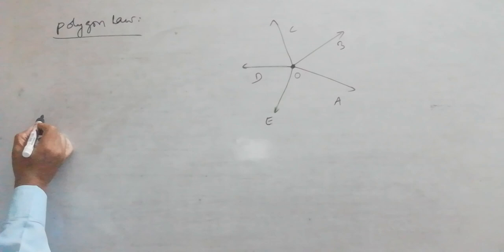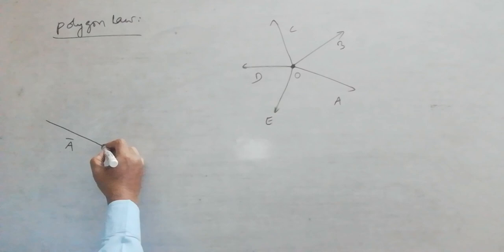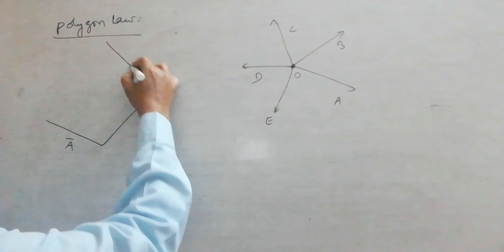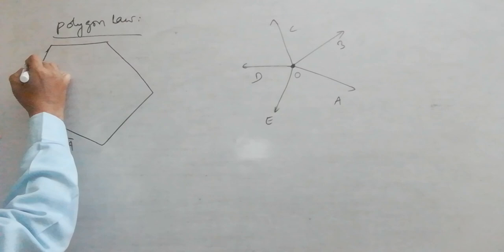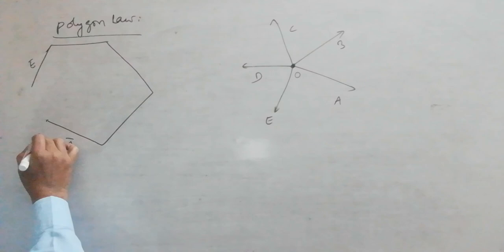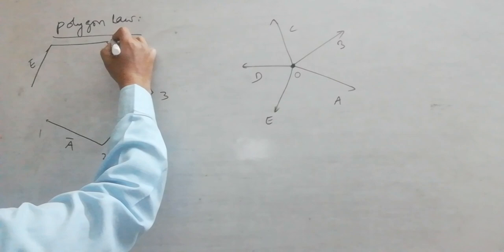Now let us take vector A here, then vector B, then vector C in this direction, and vector D, and vector E. So when the vectors are taken in order in this polygon, vertices may be labeled 1, 2, 3, 4, 5, 6.